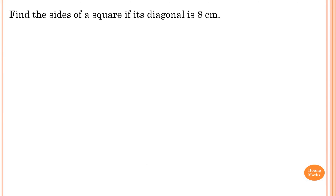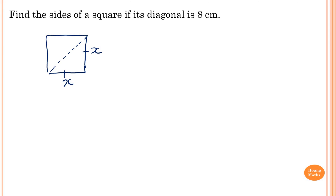Please stop the video and try this one yourself. Find the size of a square if its diagonal is 8 centimeters. We draw a square with unknown side length x. Since we don't know the size, we label each side x. The diagonal is 8 centimeters — that's the hypotenuse. So x squared plus x squared equals 8 squared.